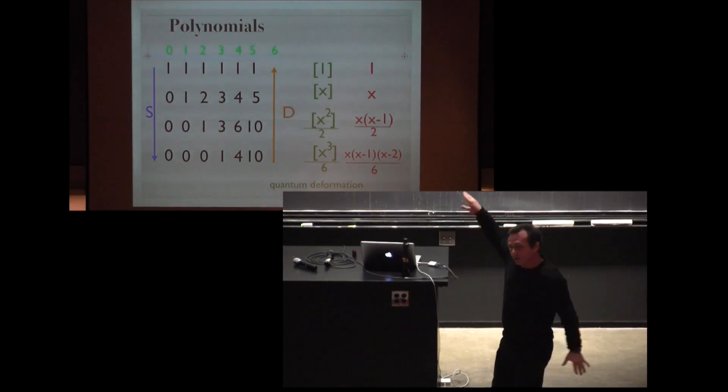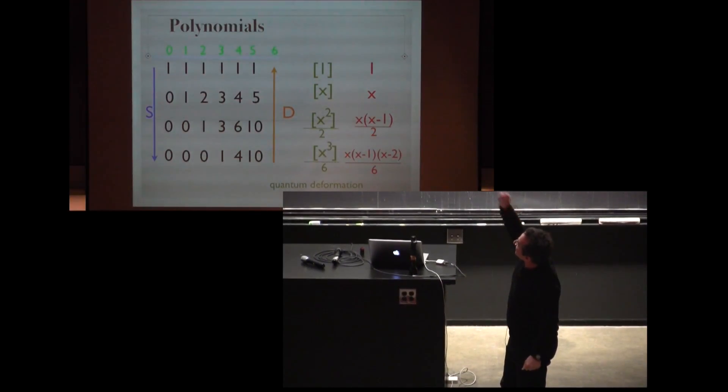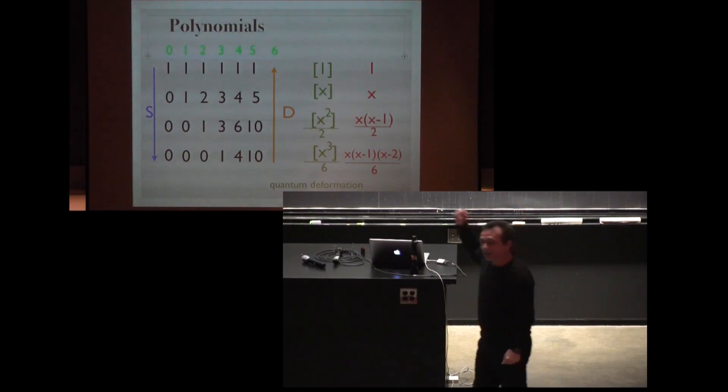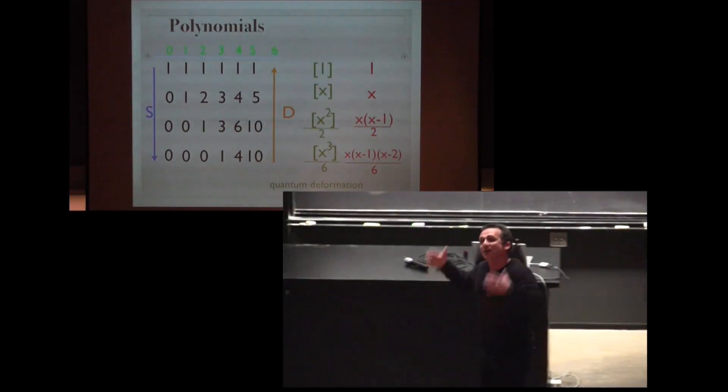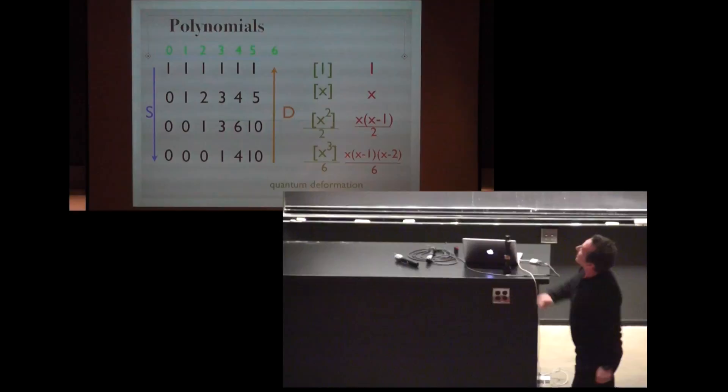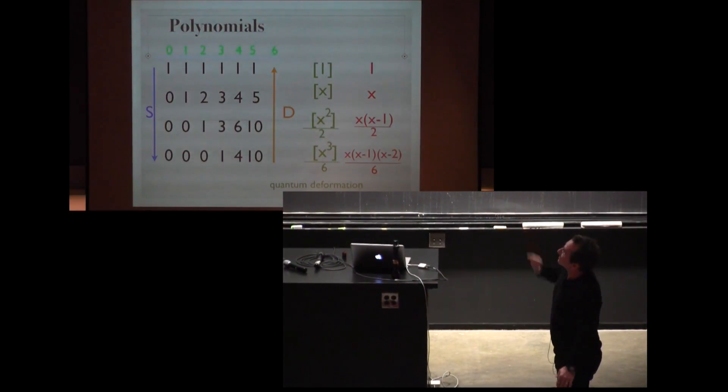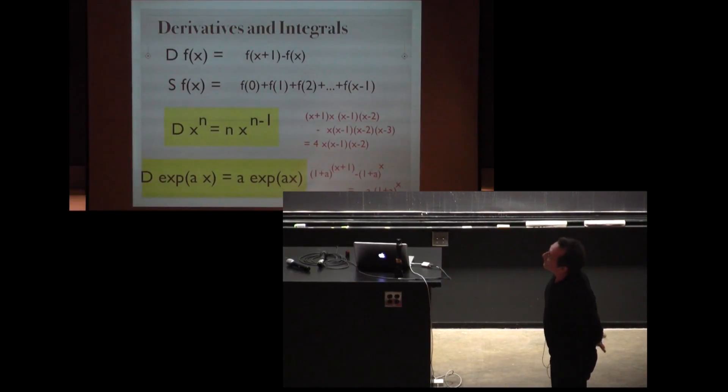Let's boldly call these rows functions, like 1, x, x squared over 2 factorial, x to the 3 over 3 factorial, etc. We have a summation which goes down and a differentiation which goes up.